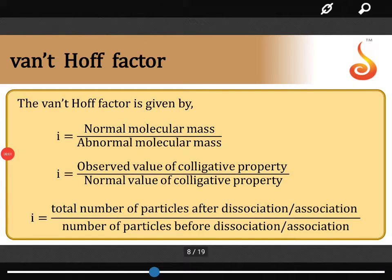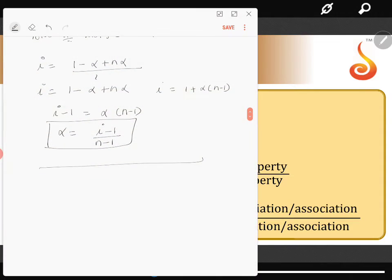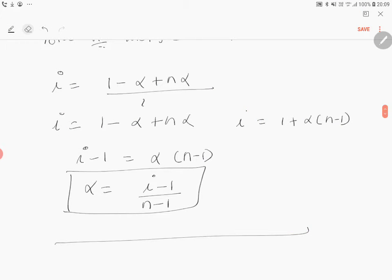We are going to see a relationship between dissociation of solute, that is alpha, observed molar mass, calculated molar mass, and n. This is very important because you can get numericals. In the previous video, I have given this formula for you, so from this formula we are going to continue.